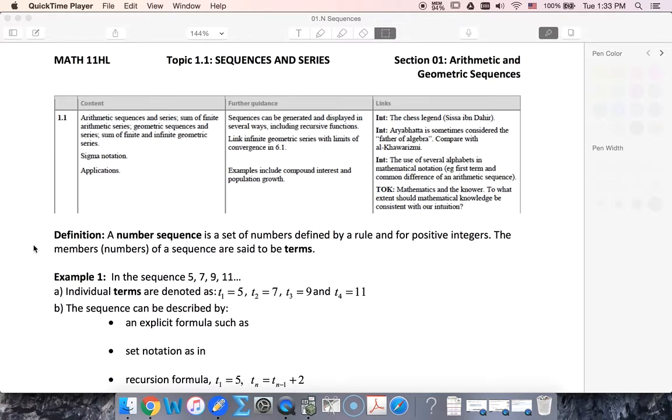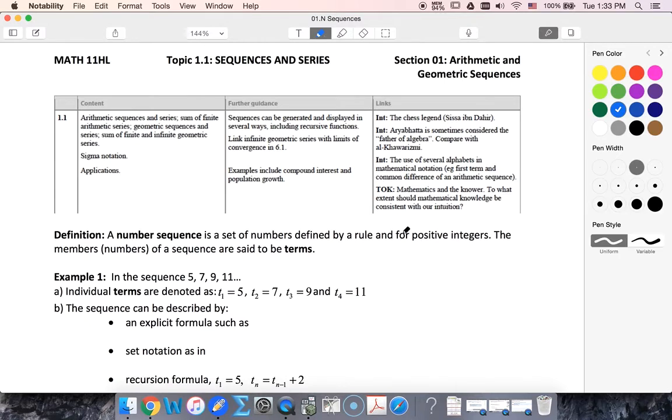Just in general, what is a sequence? Well a numerical sequence is a set of numbers that's defined by a rule for positive integers. So what we mean here for the positive integers is that each positive integer will follow a rule that gives us a specific number in our sequence.